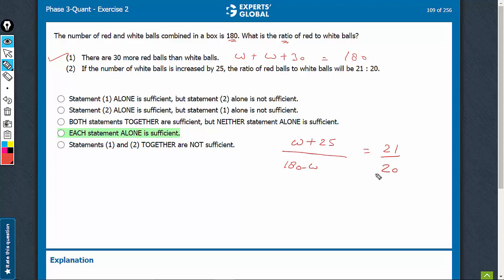We don't have to spend time figuring out the exact number. That is the beauty of data sufficiency. We just know that statement 2 is going to be sufficient.